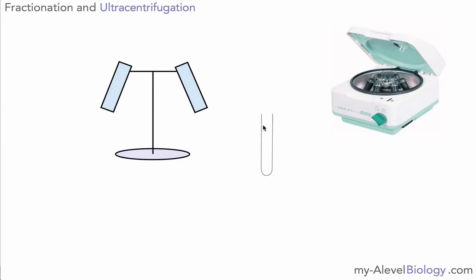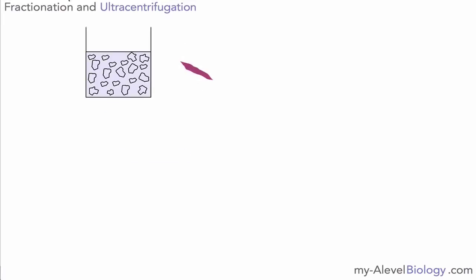Diagrammatically you may see it drawn very simply like this and the way it actually works is we have our test tubes full of our cell parts and we can stick the test tube into here. We need one in each side just to balance out the weight and this is spun very fast to separate out the different parts but we can't just chuck in some tissue and start spinning it.